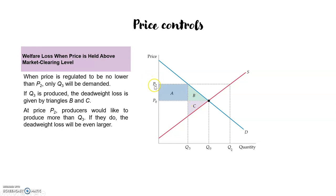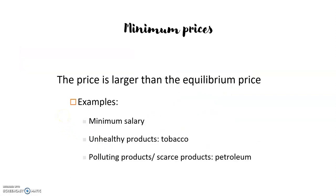At the price of p2, consumers will have only a smaller triangle as surplus, so they are losing A and B. The producers are gaining A but losing C, so the deadweight loss is minus B minus C. Examples of price floors — where a minimum price is set above the equilibrium price — include minimum salary, and prices of unhealthy products like tobacco, polluting products, or scarce products like petroleum.